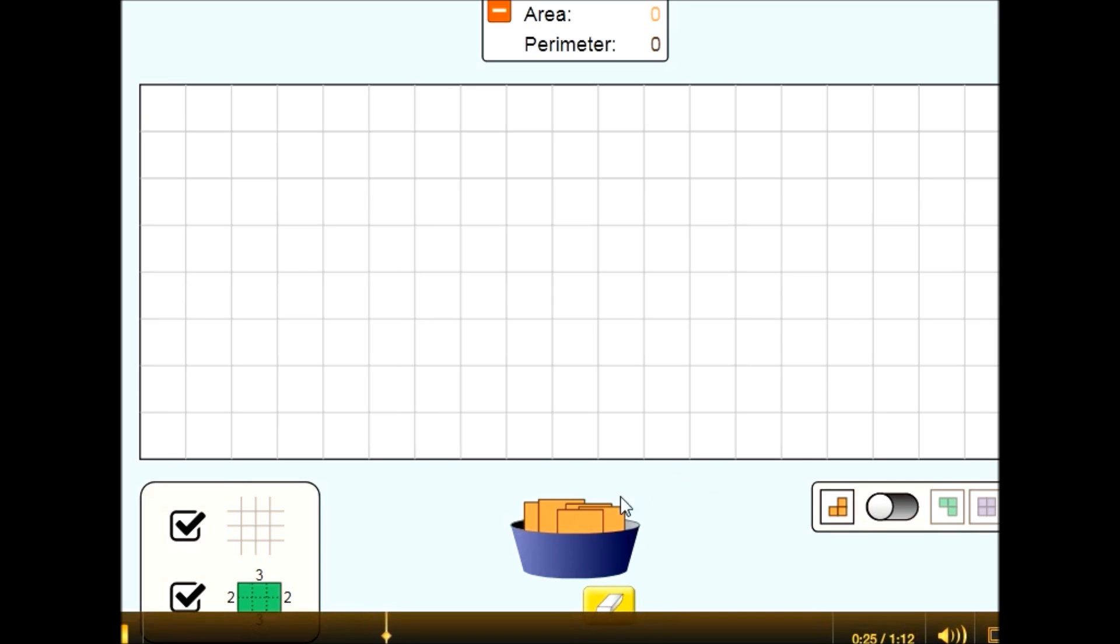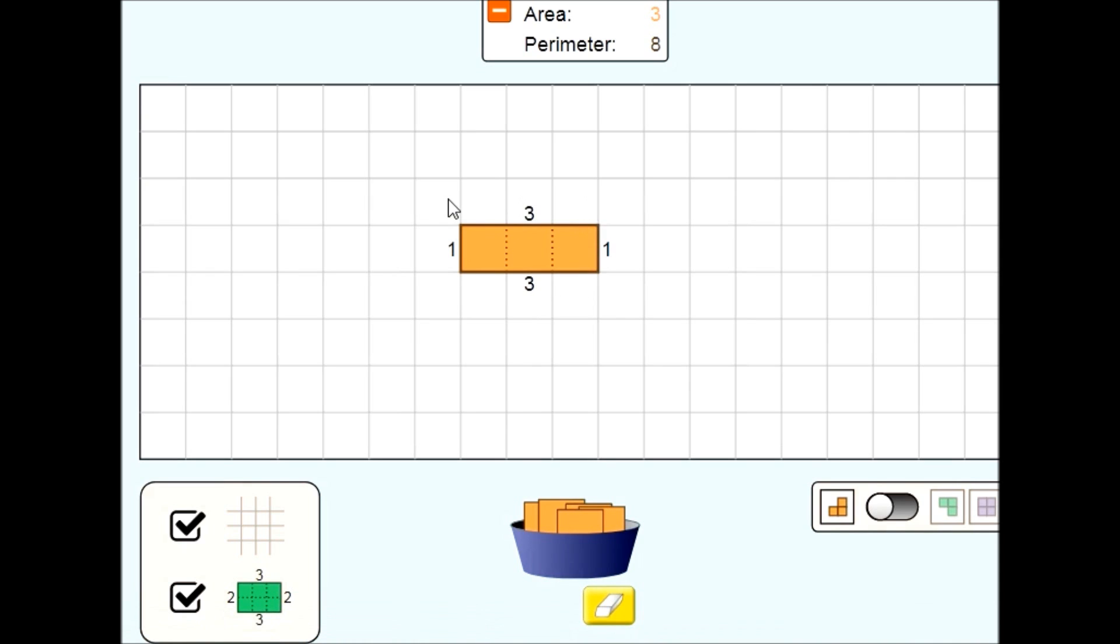Let's go ahead and review perimeter using this simulation. I can place some squares on this grid here and we end up with a simple rectangle. To find the perimeter of this rectangle, you add up the lengths of all the sides. The perimeter is the distance around a polygon. We have a length of 1, 2, 3 for a total of 3, and then a width of 1.